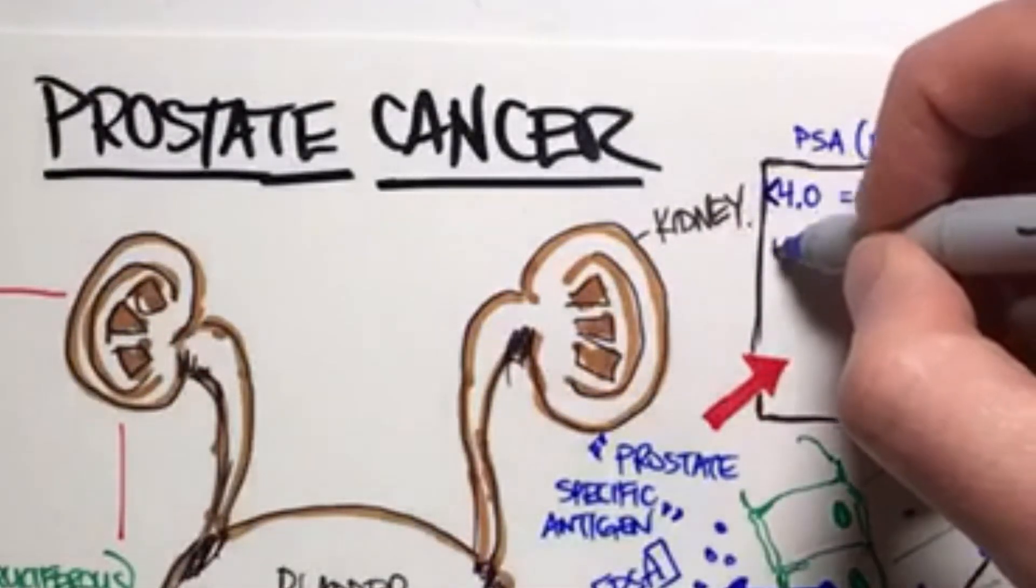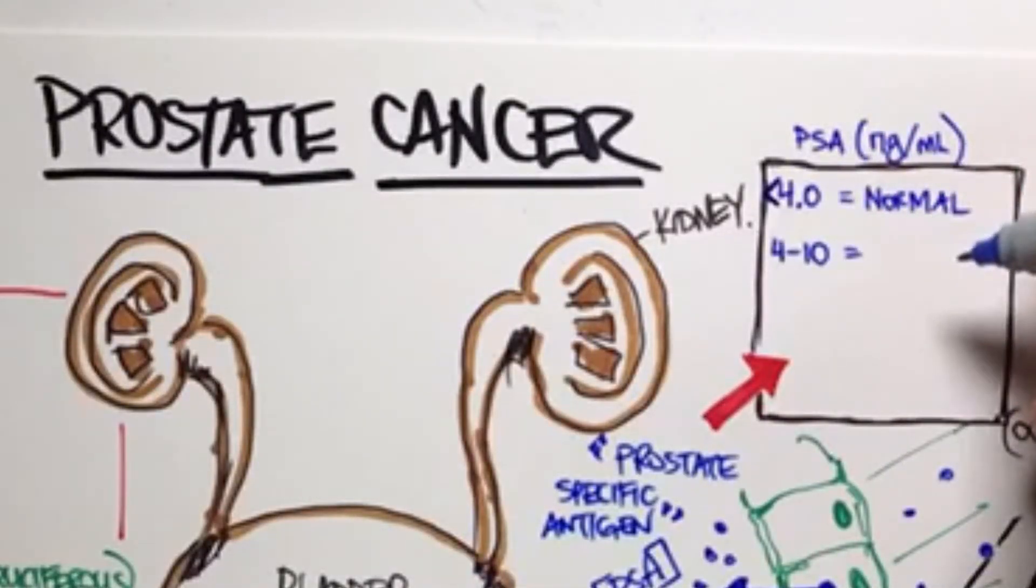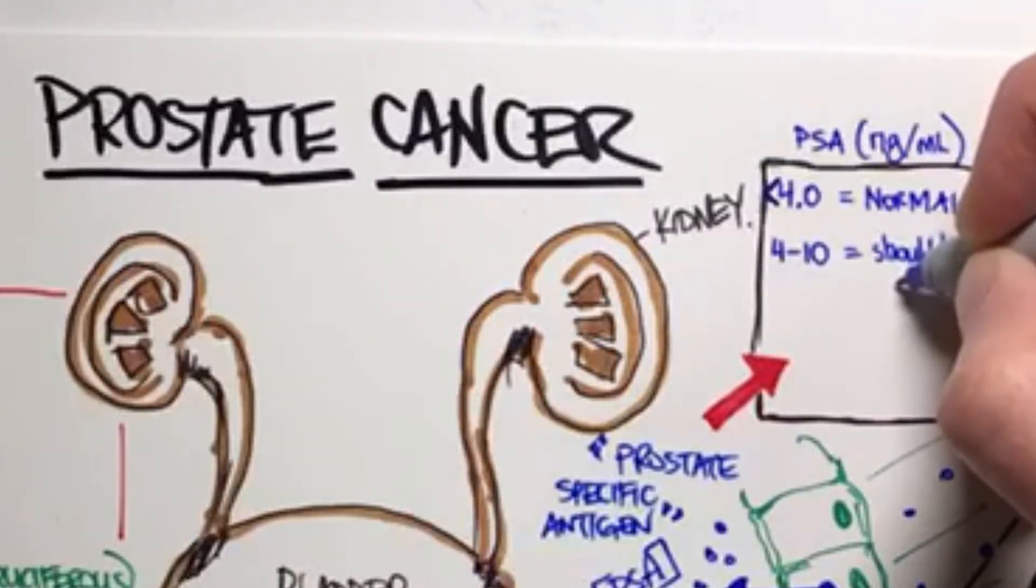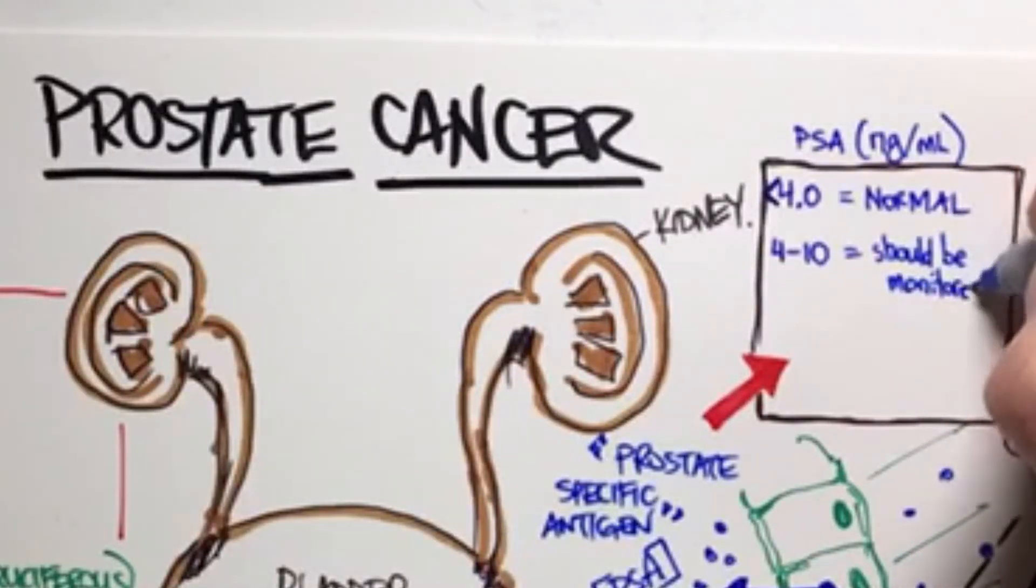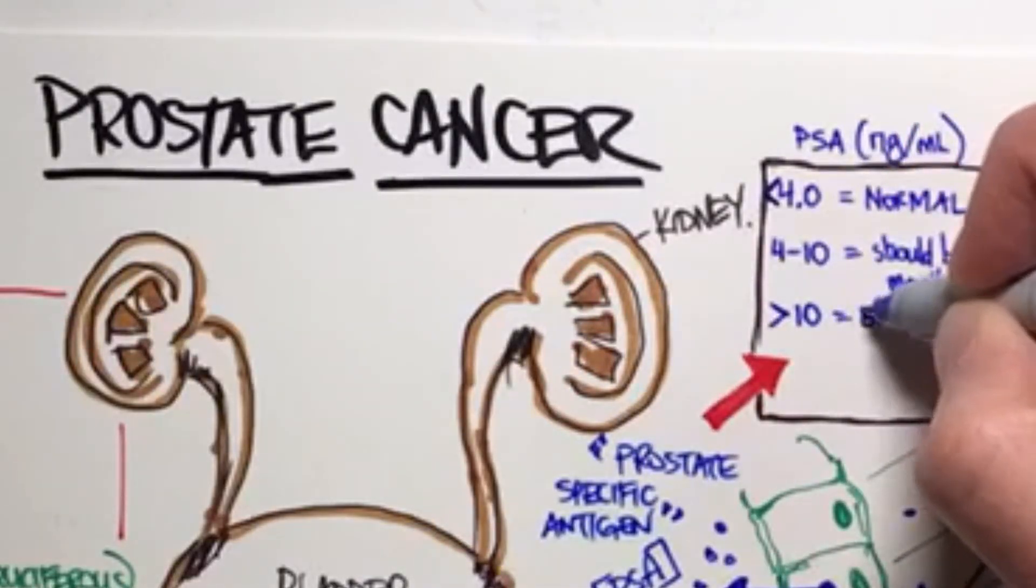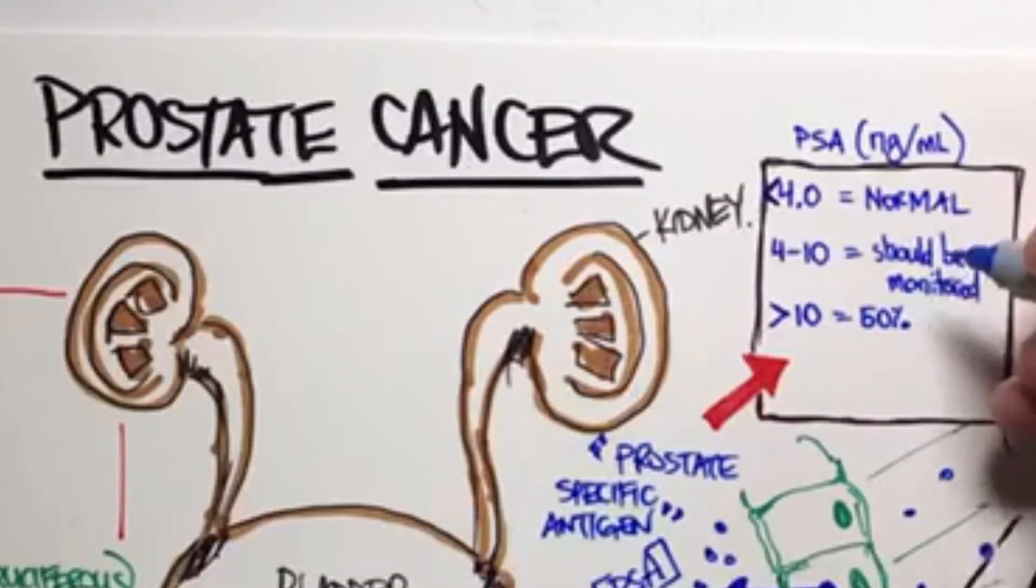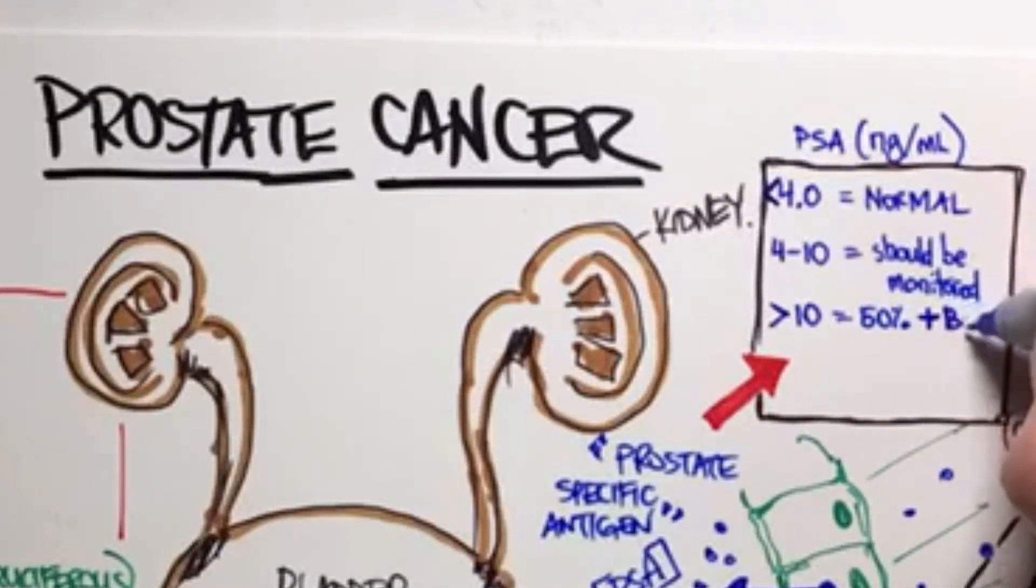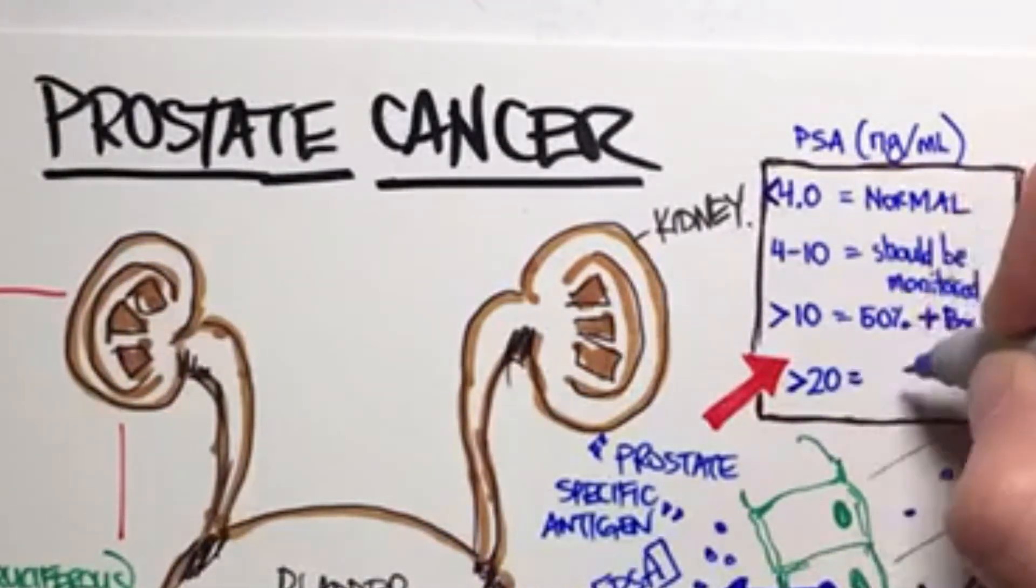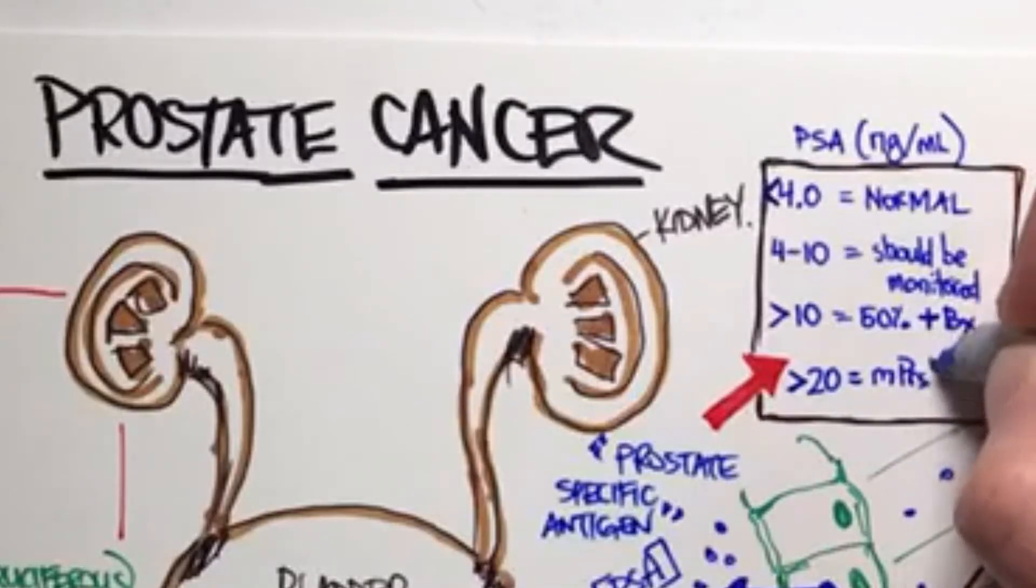4.0 to 10 is something that you would want to monitor and follow up on. It is high, so it is out of the normal range. It is not diagnostic on its own though. We can't say that that's clearly prostate cancer. A measurement of PSA above 10 though, we do find that 50% of those cases will have a positive biopsy, will have a biopsy showing that there is prostate cancer. Anything above 20 increases the risk that we're actually dealing with a metastatic case that we have disease that has escaped the prostate capsule.